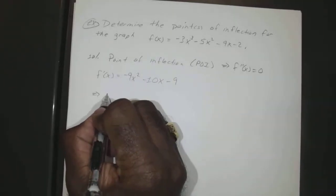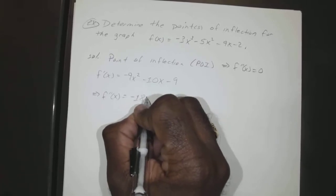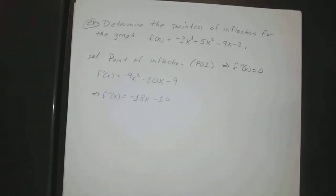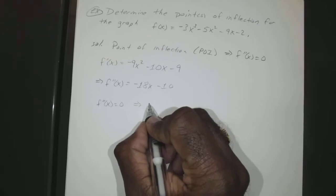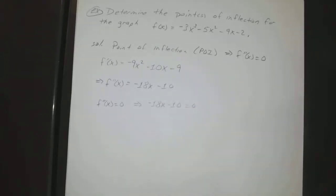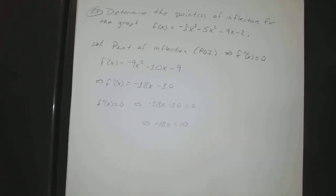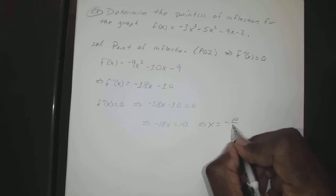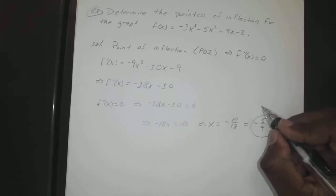Our second derivative: bring down our 2, it gives us negative 18x, and that just becomes minus 10. So our second derivative equal to zero is just negative 18x minus 10 equal to zero. So if we add 10 to both sides, it's negative 18x equals 10. Divide both sides by negative 18, x equals negative 10 over 18, which reduces to negative 5 over 9. So this is our point of inflection.